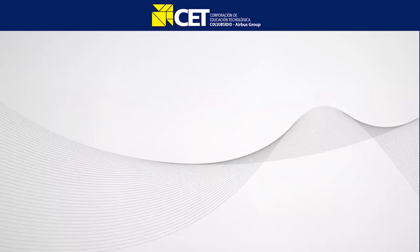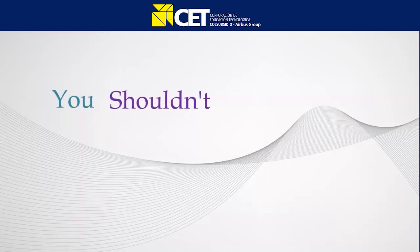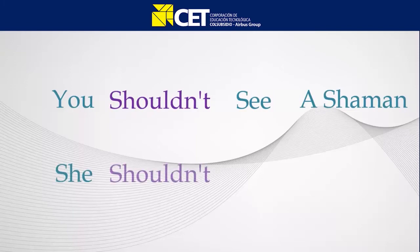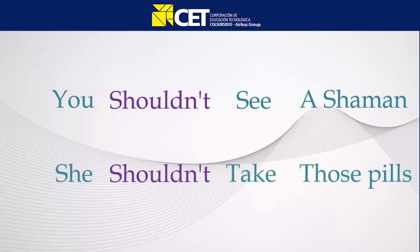Now let's see some negative examples. You shouldn't see a shaman. She shouldn't take those pills. Shouldn't is the negation when we use should, and it is composed of should plus not.